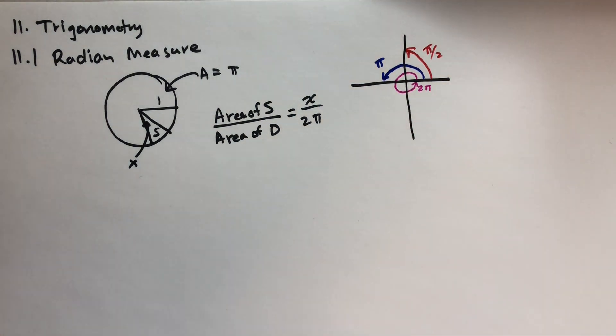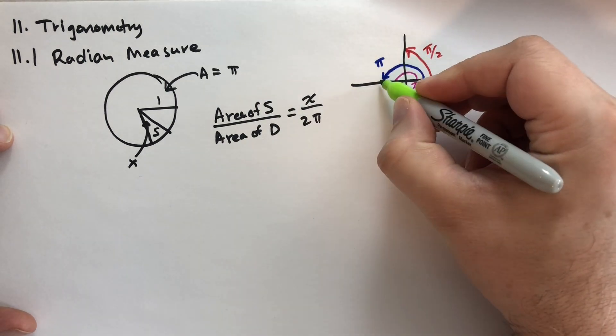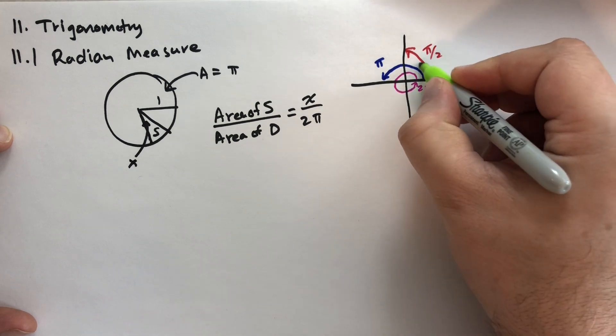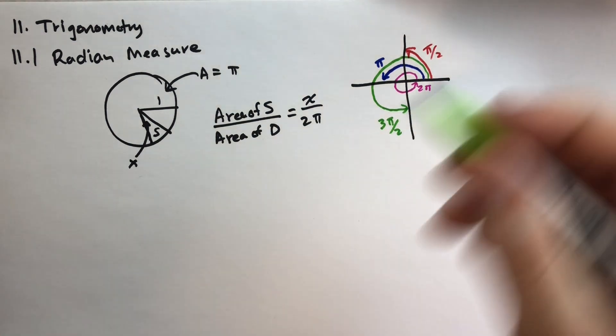Alright? And as your mathematical mind is engaging, you're probably thinking to yourself, well, what's 3 pi over 2? Well, 1 pi over 2, 2 pi over 2 is a full pi. And if we go 3 pi over 2, start here, and we go all the way around 3 pi over 2. That's 3 quarters of the circle.